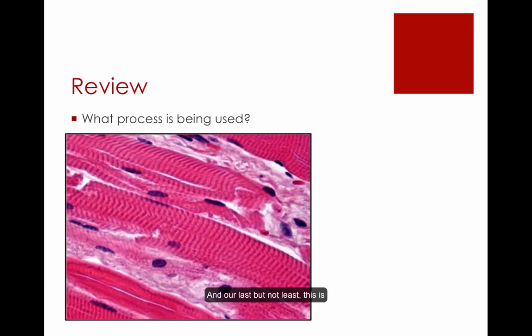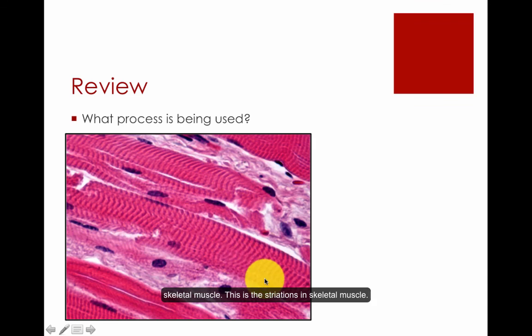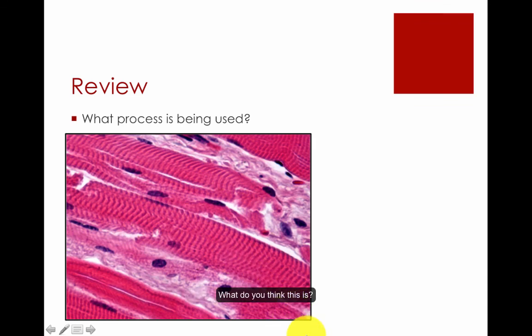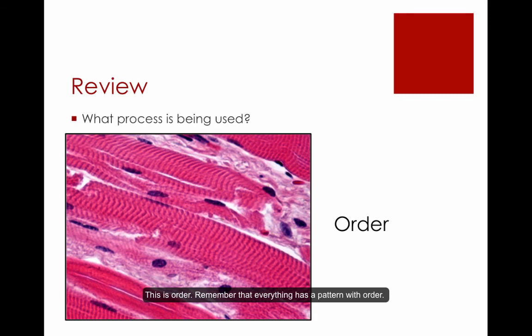Our last example is skeletal muscle — specifically the striations in skeletal muscle. This is order, because everything has a pattern with order. Hopefully you now understand how to use the properties of life, because next you will move on to life's hierarchy.